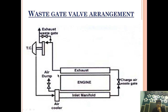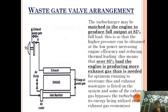So why are these arrangements there? The turbocharger may be matched to the engine to produce full output at 85% load. This is so that higher pressure can be obtained at low power, increasing engine efficiency and reducing thermal loading. So what is happening is that this engine is matched in such a way that when it runs at 85% the turbocharger operates at maximum efficiency — meaning the turbocharger produces the maximum amount of compressed air at 85% engine load.